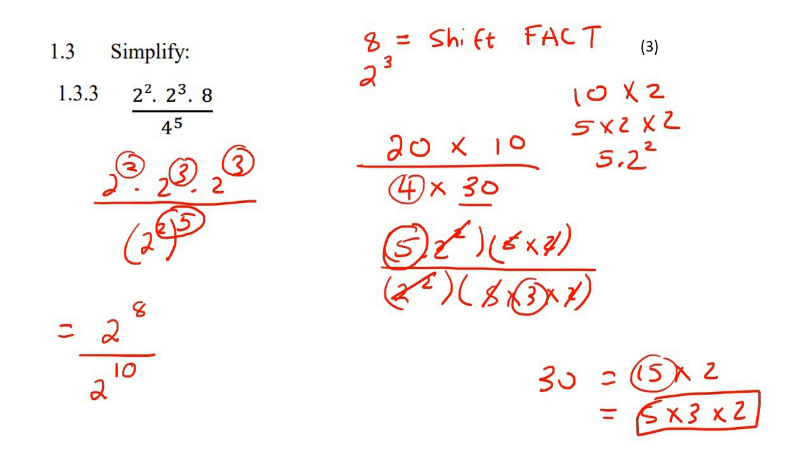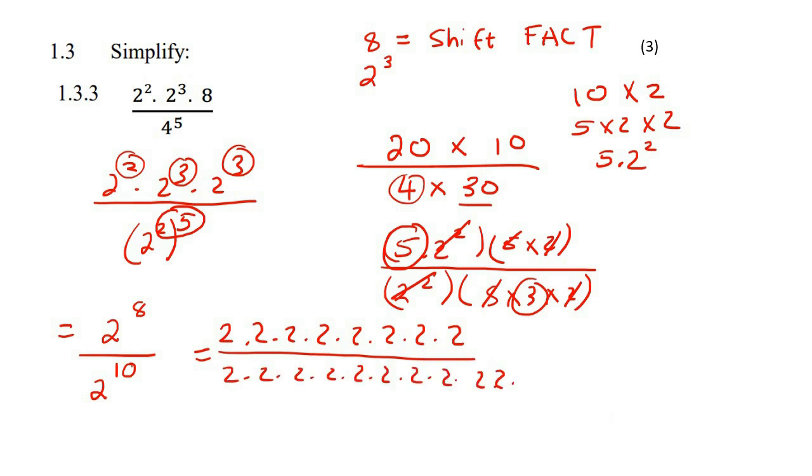Now we're going to stick to exponent rules. So what you could think of here is that at the top, we've got two to the power of eight. Now I know this is going to take a while, but that's the same as having eight twos at the top, right? And then at the bottom, we have 10. So if you had to cancel out, you could cancel those like that.